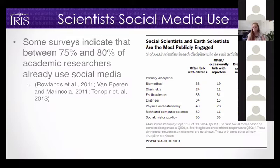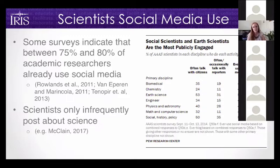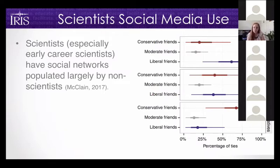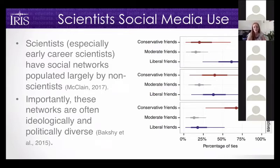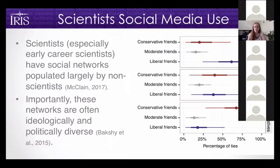Between 75 and 80% of academic researchers are on social media, but scientists are only infrequently posting about science — a missed opportunity. Early-career scientists in particular have social networks populated by non-scientists, and these networks are often ideologically and politically diverse. A graph showing Facebook friends' political self-identification shows a pretty good mix of liberals, moderates, and conservatives. This is an opportunity to reach out and talk to people about science who may have different ideological and political views than we do.